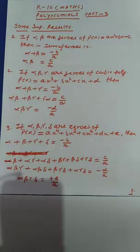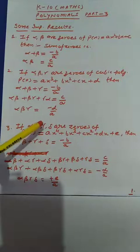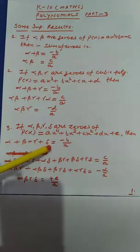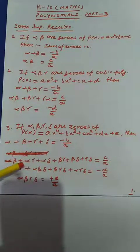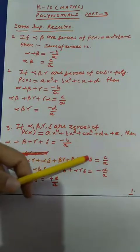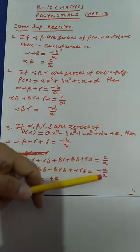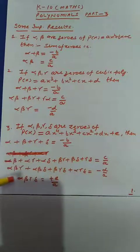If I have the bi-quadratic polynomial, then it will have four zeros — let these be alpha, beta, gamma, and delta. For the bi-quadratic polynomial, we will get four results: sum of zeros equals minus b divided by a; sum of product of zeros taken two at a time equals c divided by a; sum of product of zeros taken three at a time equals minus d divided by a; and product of zeros equals e divided by a.